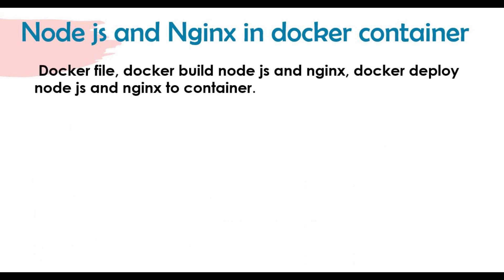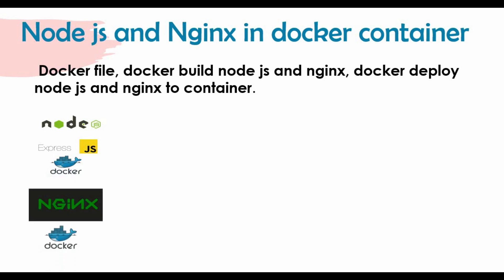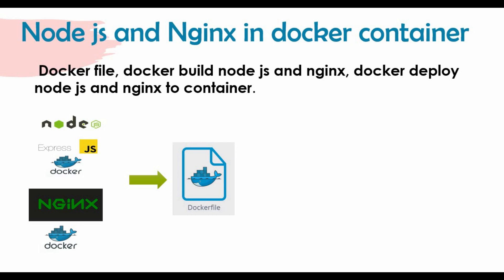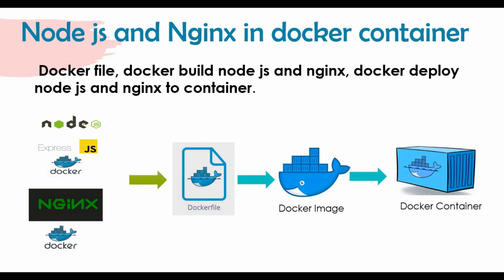What we'll be doing is creating a Dockerfile, doing the docker build, and docker deploy — similar procedure to before. We'll have Node.js and Express running on Docker, and also Nginx on Docker. We'll write separate Dockerfiles for each, creating one image for the Node.js Express app and another for Nginx, and then create separate containers for each.